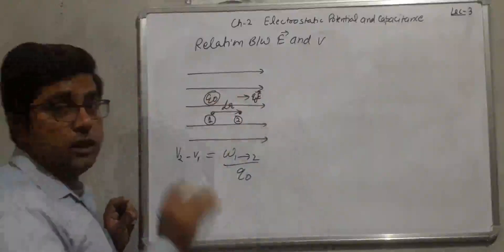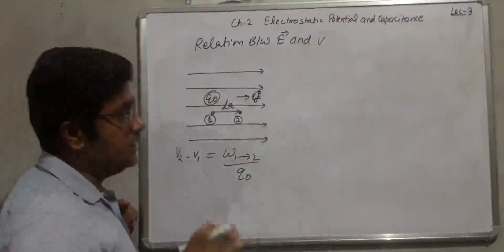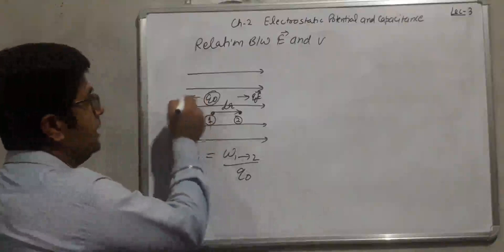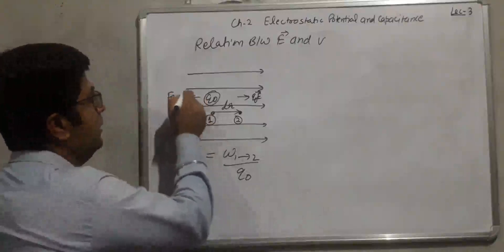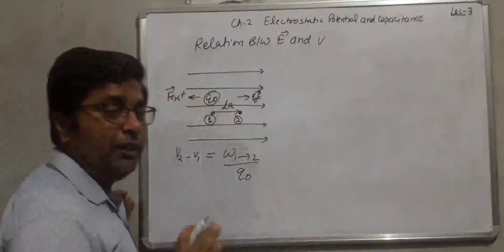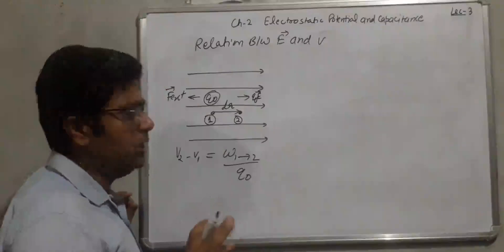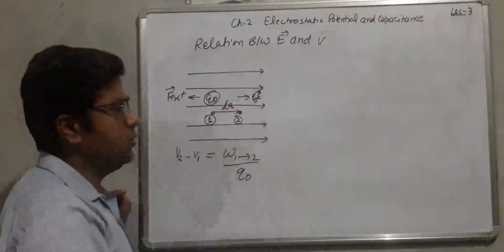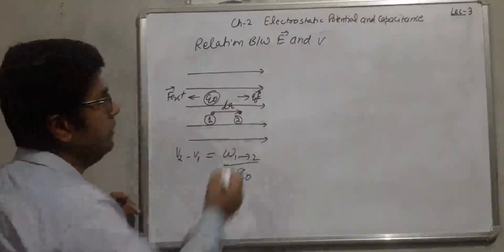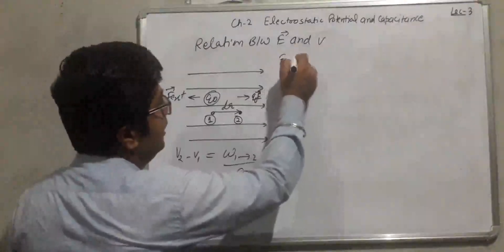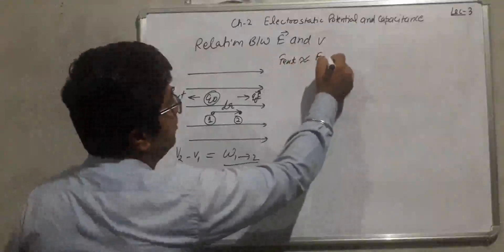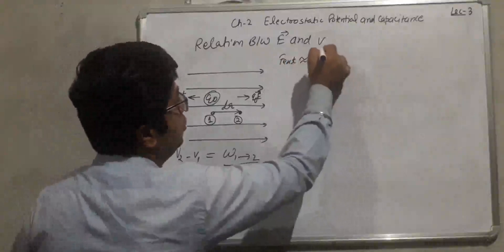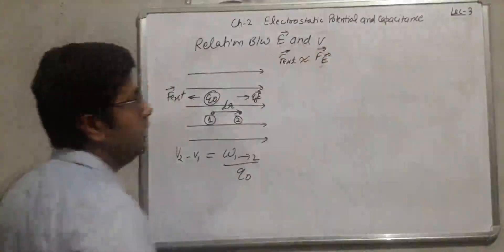A positive charge experiences electric force in the direction of the electric field. The external force is approximately equal in magnitude to the electric force but reverse in direction. So F_external is nearly equal to F_electric field.